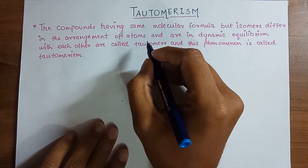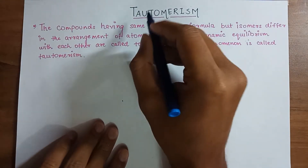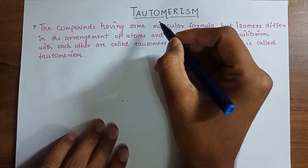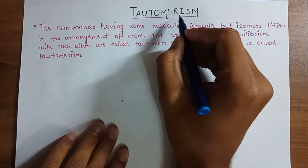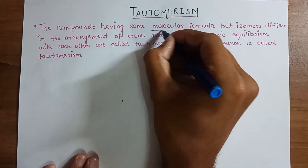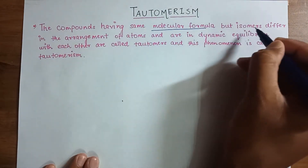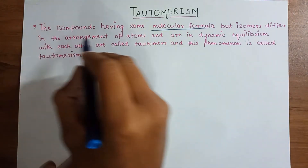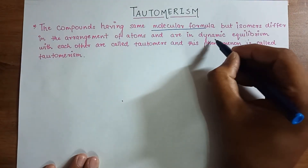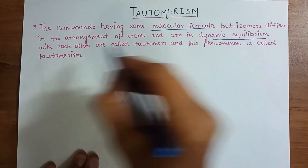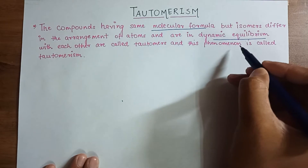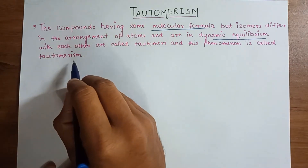Hello friends, in this video we will learn about tautomerism. In the previous video we learned about metamerism. The compounds having same molecular formula but isomers differ in the arrangement of atoms and are in dynamic equilibrium with each other are called tautomers, and this phenomenon is called tautomerism.